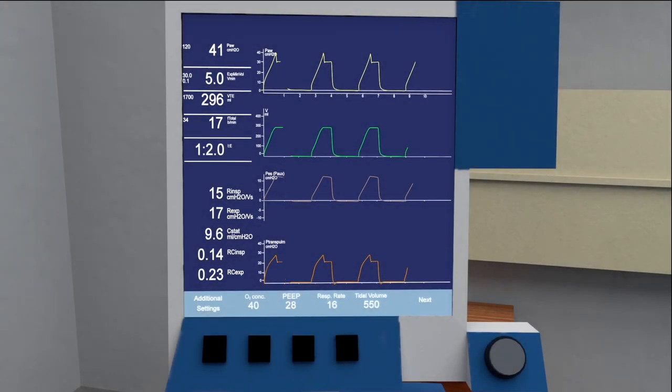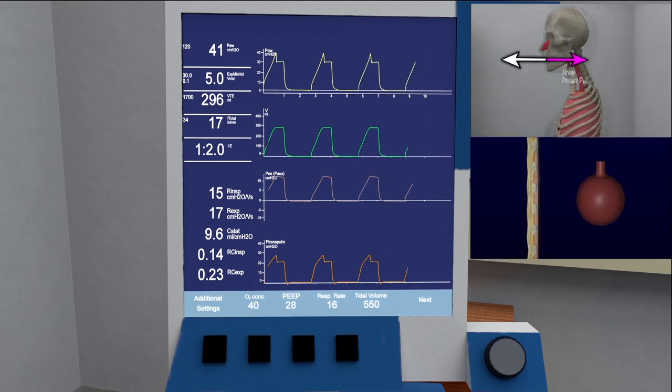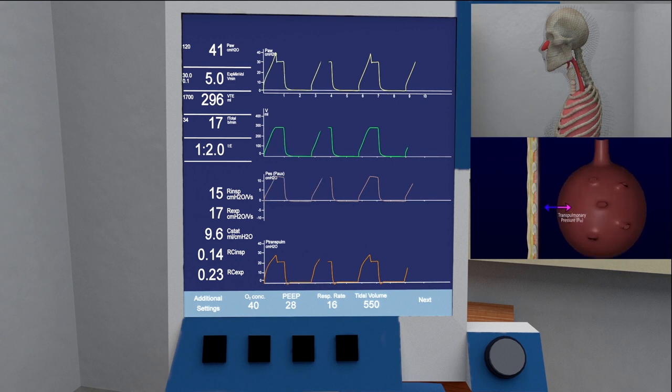Historically, avoiding this meant keeping the plateau pressure, as measured at the airway opening, less than 30 centimeters of water. As described above, however, the pressure at the airway opening is deceiving, since it is only the transpulmonary component that poses a danger to the alveolus.